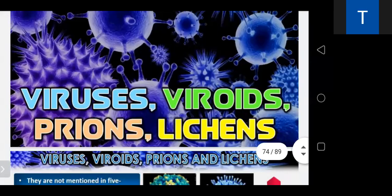Now I'll discuss viruses, viroids, prions, and lichens. Nowadays you hear about coronavirus everywhere. The virus is a connecting link between living and non-living because viruses don't have any cell. In the first chapter we discussed that for a living organism, the characteristic feature is that they have a cellular structure — cells are the basic unit of life.